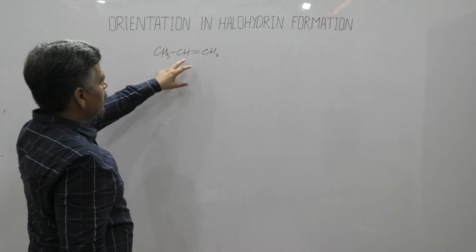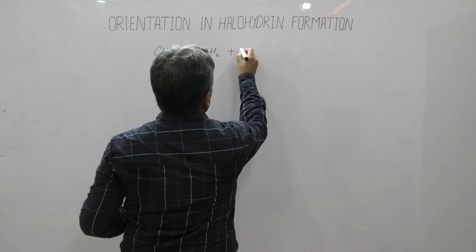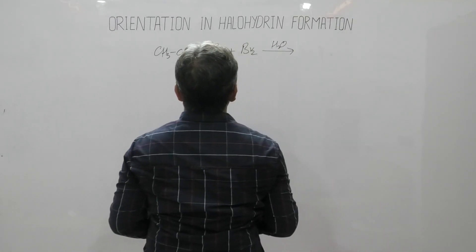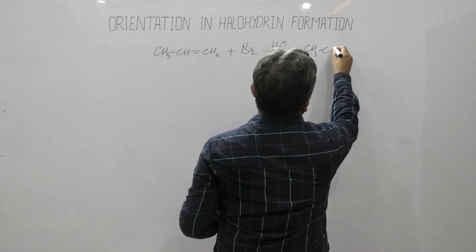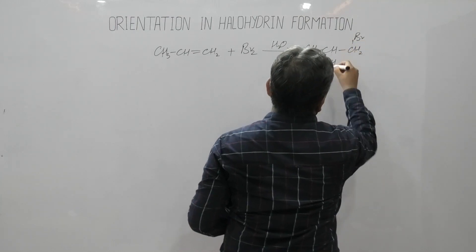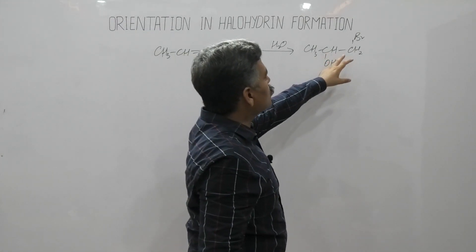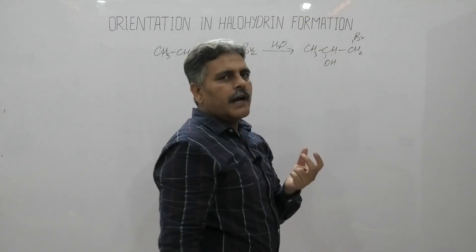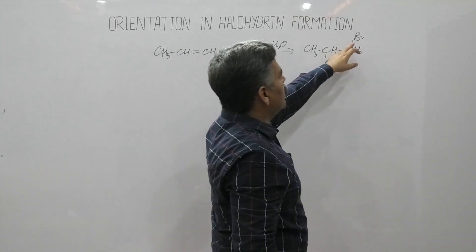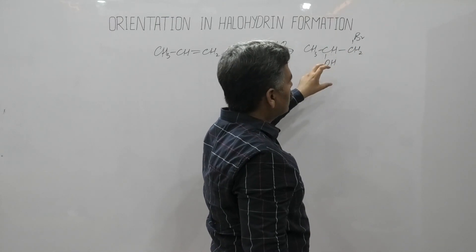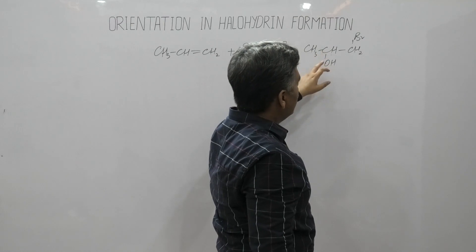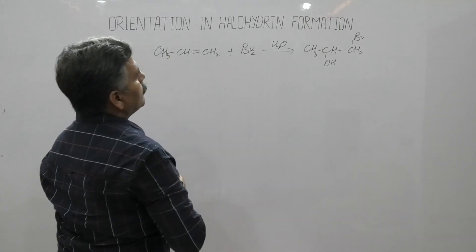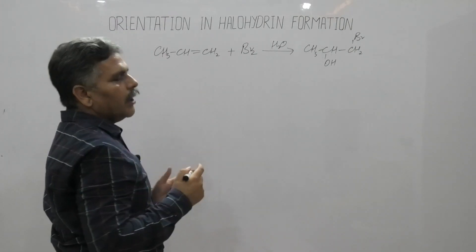We have propene as an example of an unsymmetrical alkene. When it reacts with bromine in the presence of water, it gives us a vicinal halohydrin. It is important to note the position of attachment of bromine and OH at these two carbons, because these two carbons are not equivalent. This addition follows the extended Markovnikov rule.